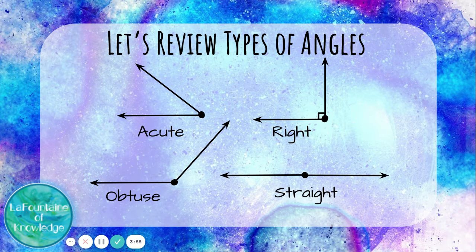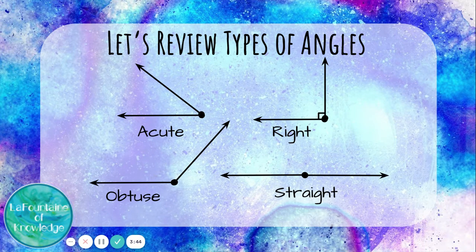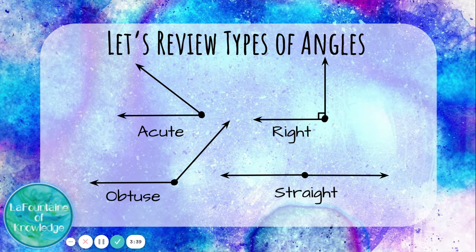Acute angles measure less than 90 degrees. Right angles measure exactly 90 degrees. Obtuse angles measure more than 90, but less than 180 degrees. And straight angles measure exactly 180 degrees.